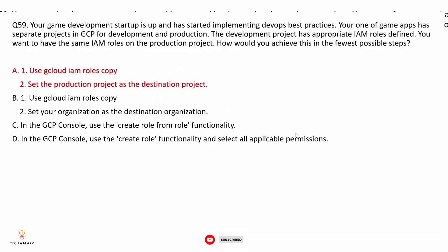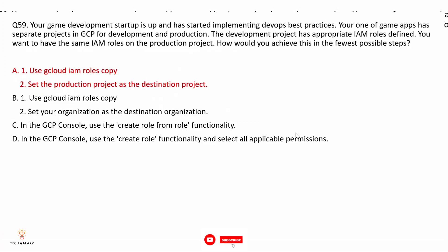Option A: use gcloud iam roles copy and set the production project as the destination project. The gcloud iam roles copy command copies IAM roles from one project to another. Since you want the same IAM roles on the production project as the development project, this is the correct approach. Option B: use gcloud iam roles copy but set your organization as the destination — not correct because the requirement is to copy roles to another project, not the organization.